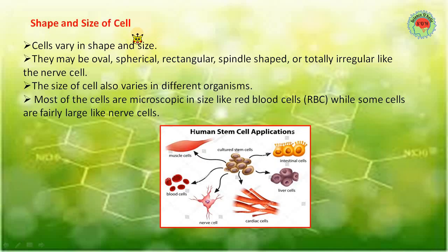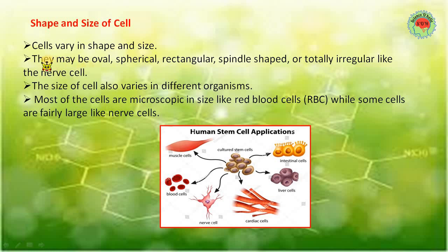Now let's see the shape and size of a cell. Cells vary in shape and size - there are many different types of cells. Some are very small, some are large, and some are very large. Cells that are tiny cannot be seen with our naked eyes, so for that we need a microscope - an instrument that magnifies tiny things we cannot see with the naked eye. Cells may be oval, spherical, rectangular, spindle-shaped, or totally irregular like the nerve cell.